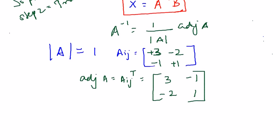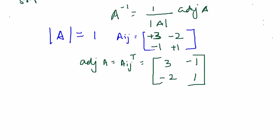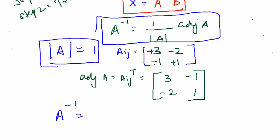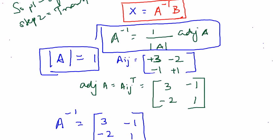The column becomes a row. So now when I have to find out A inverse, it is nothing but, we know the formula, 1 by mod A into adjoint of A. But mod A was already 1. Therefore A inverse can be the same as adjoint of A: 3 minus 1 minus 2 1.